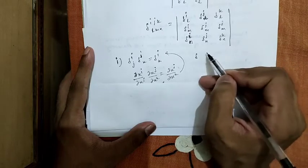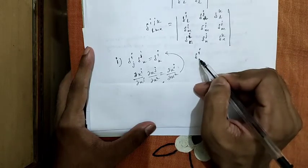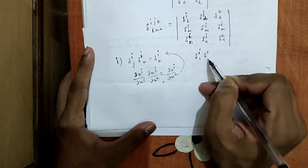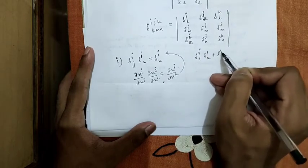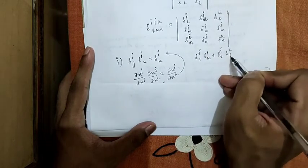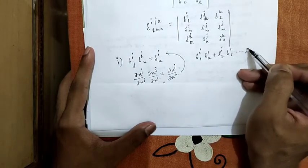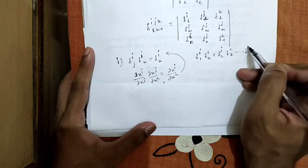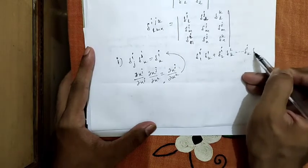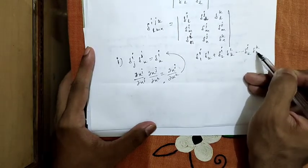So del_i1 del_1k plus del_i2 del_2k and so on as del_ik del_kk.